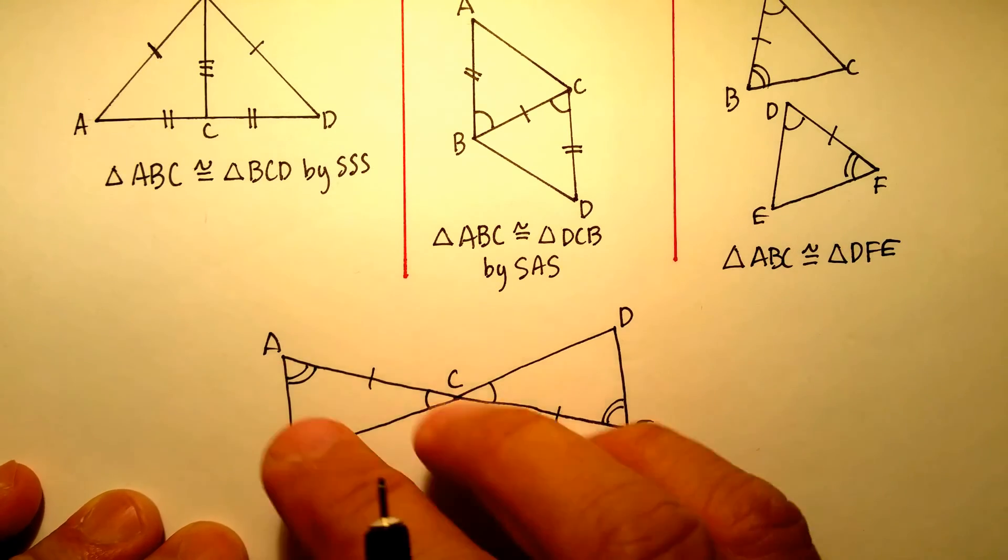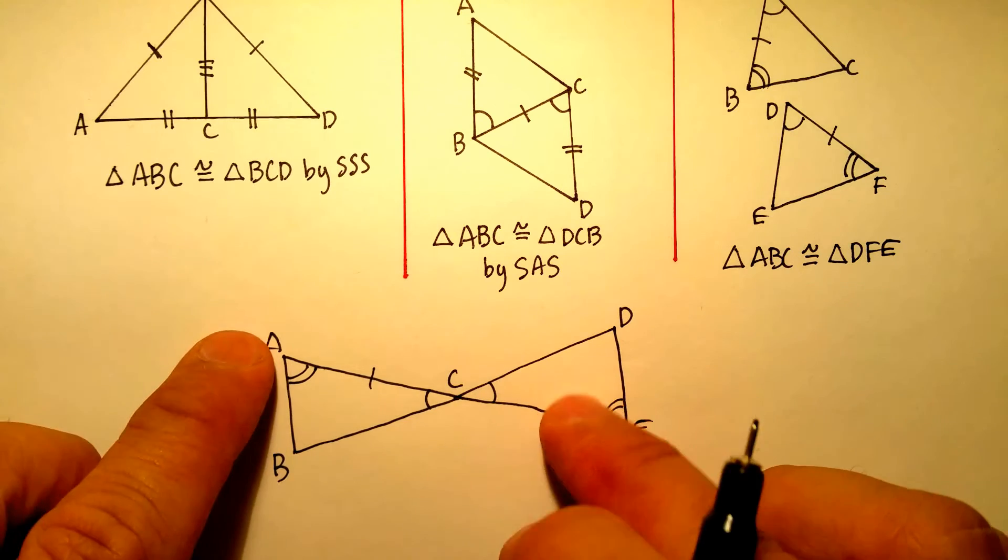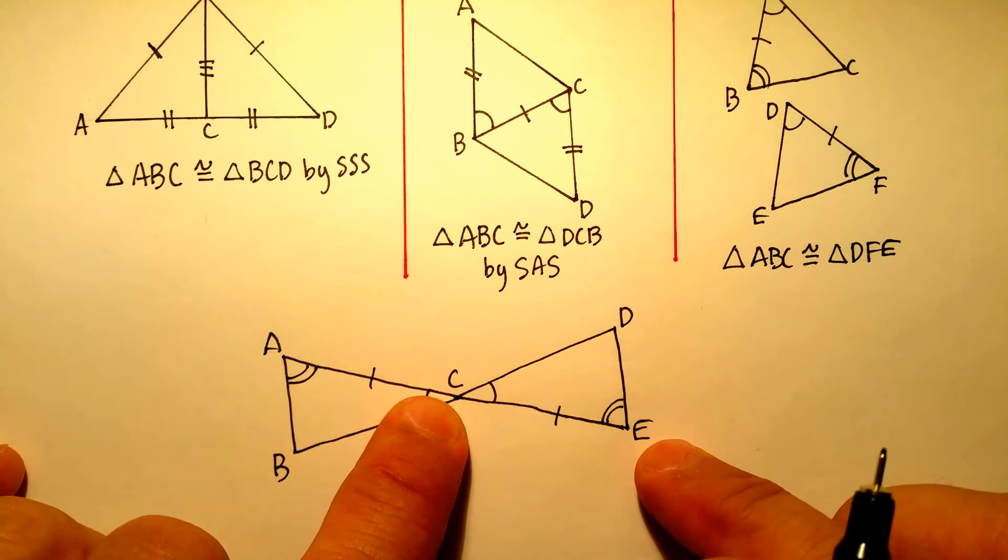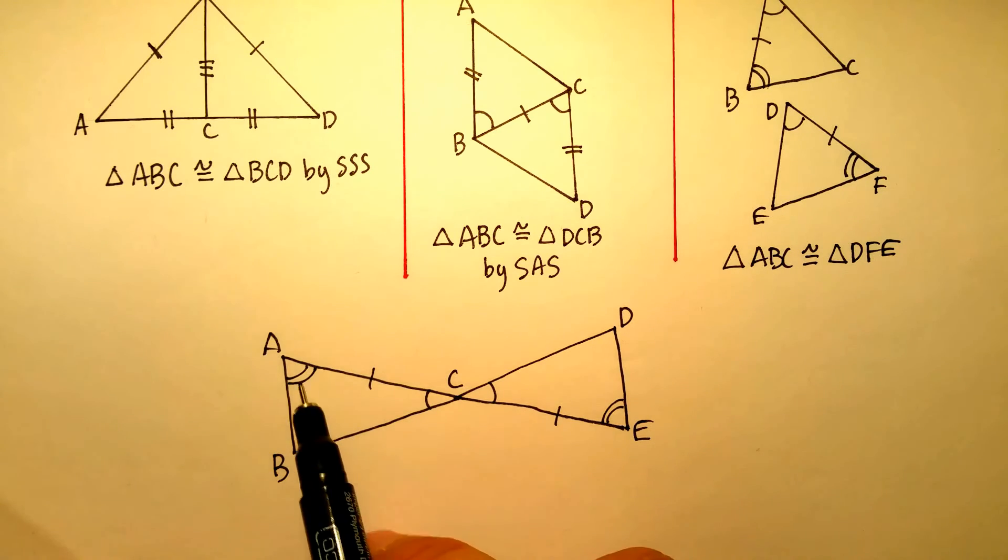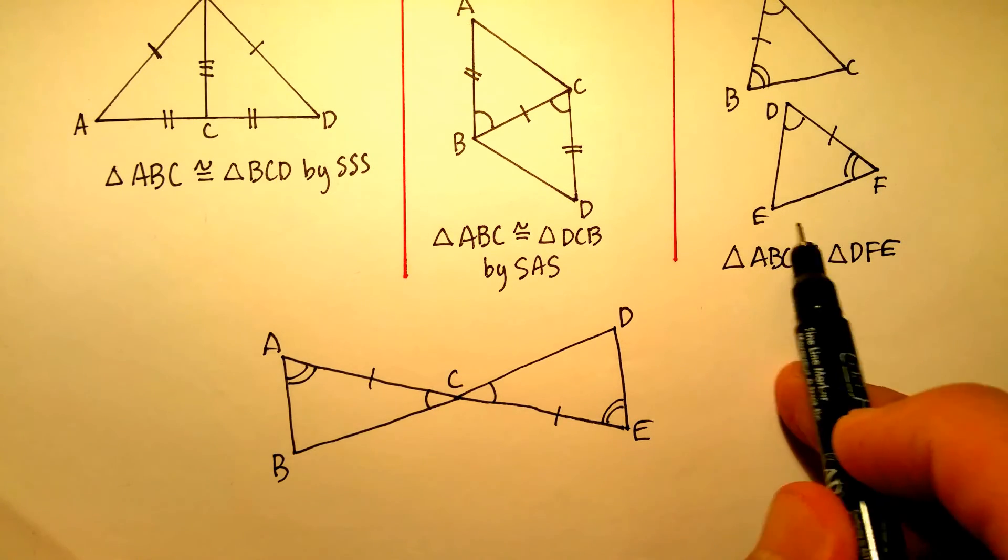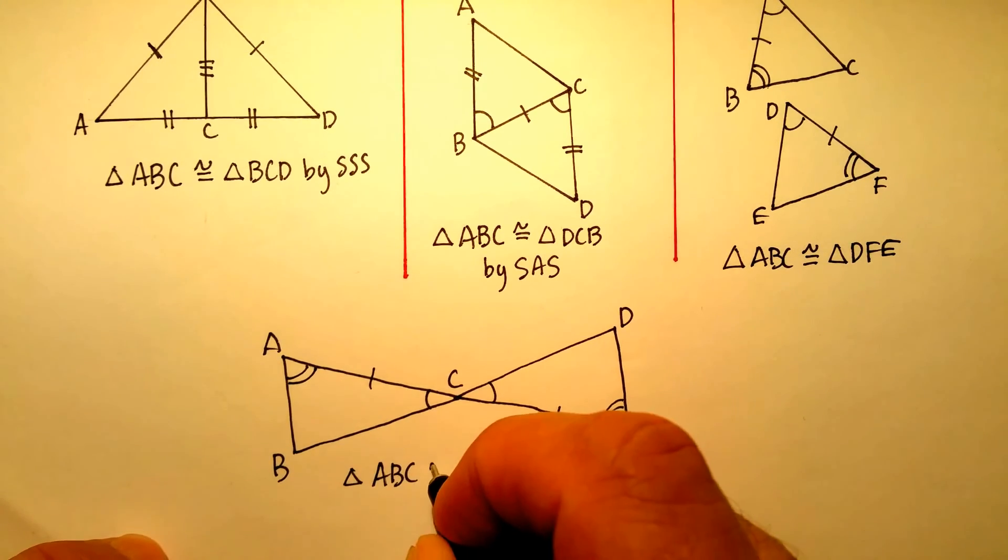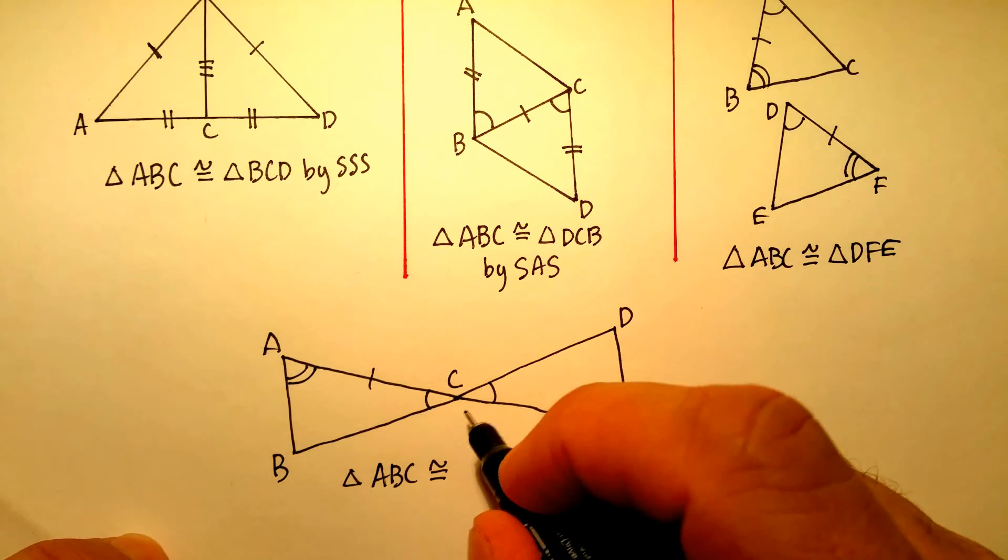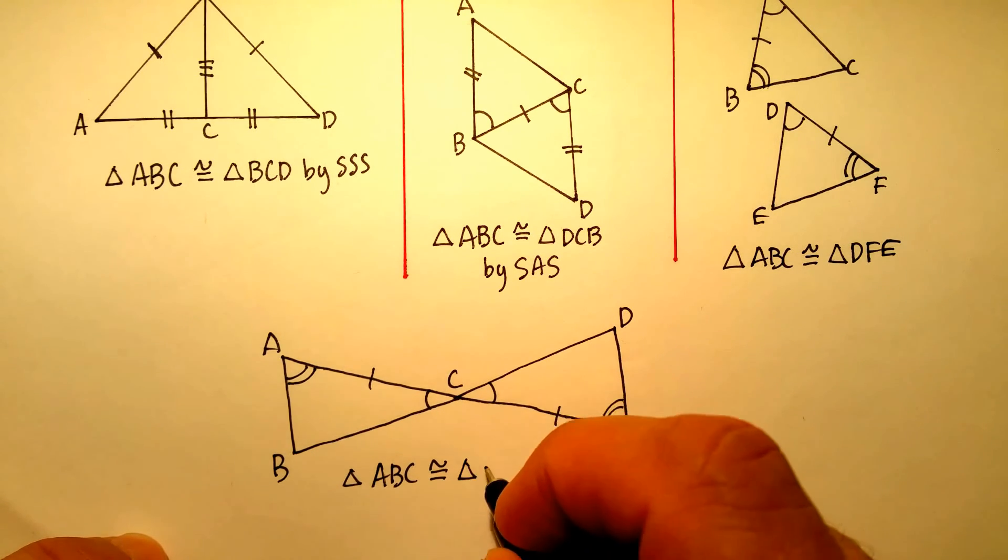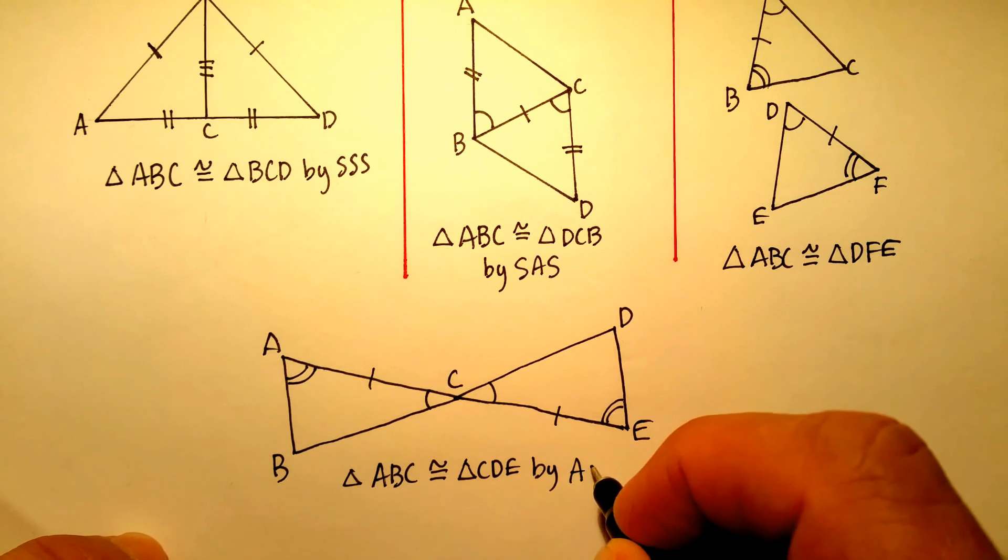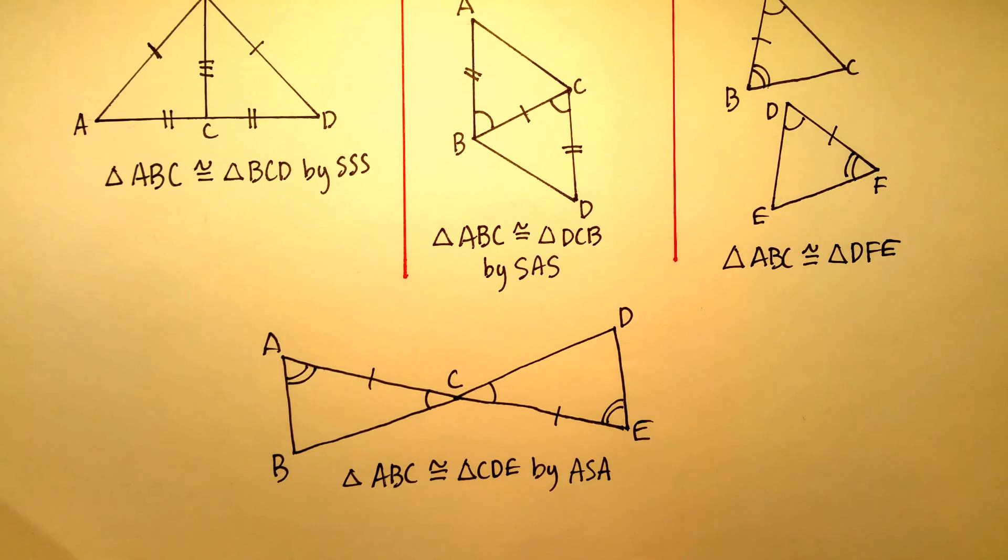So the question is, which one of the three theorems proves that triangle ABC is congruent with triangle CDE? And if you said angle-side-angle, this one over here, you'd be correct. So triangle ABC is congruent to triangle CDE by the angle-side-angle. I hope this was helpful as a demonstration.